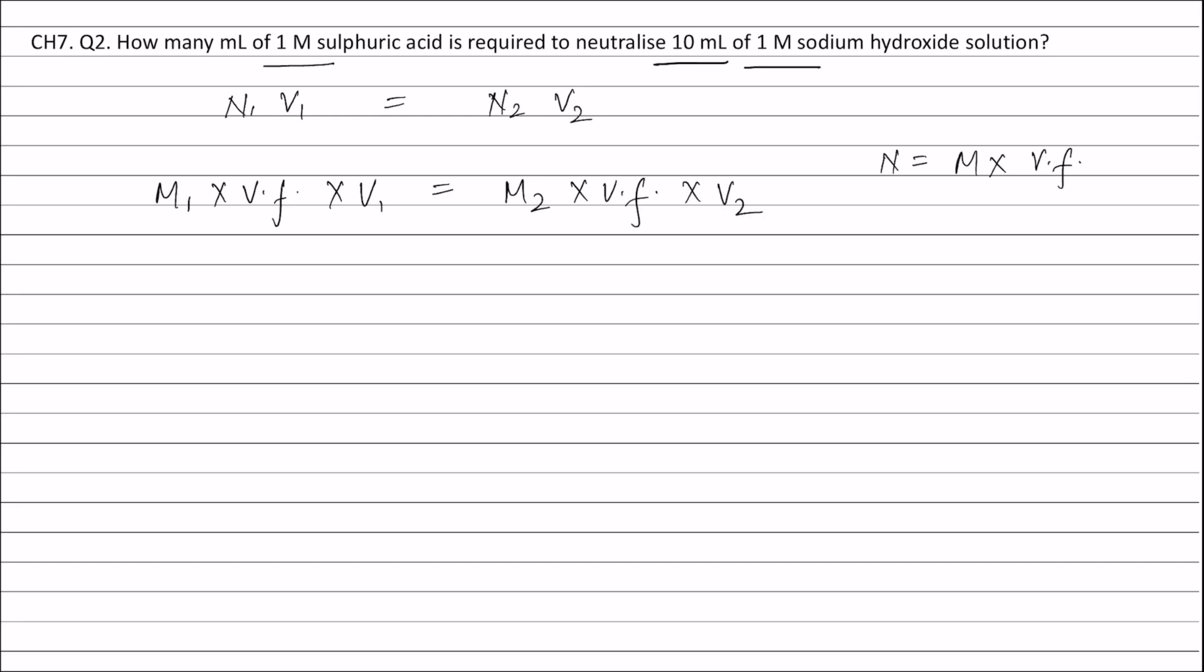M1 is the molarity of sulfuric acid, valency factor is the valency factor of sulfuric acid, and V1 is the volume of sulfuric acid which is asked in the question.